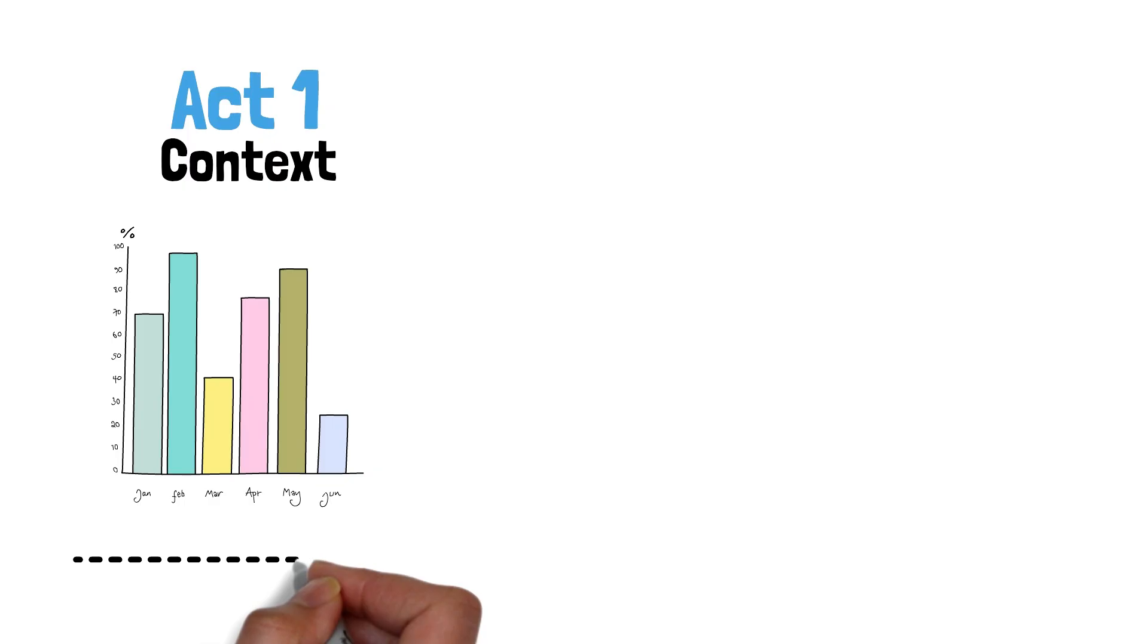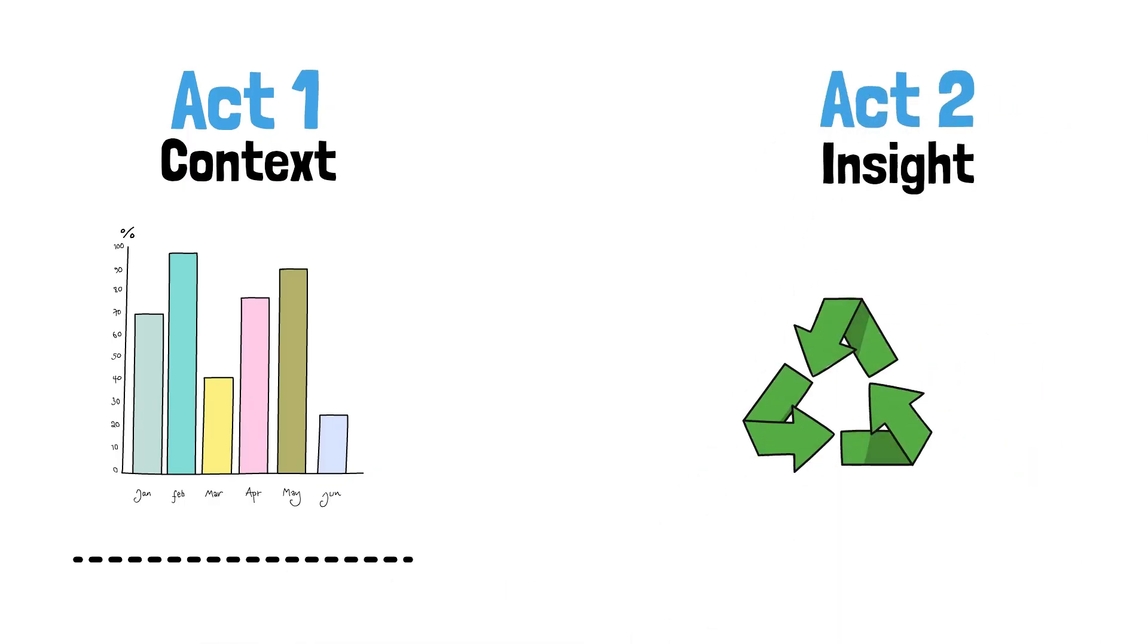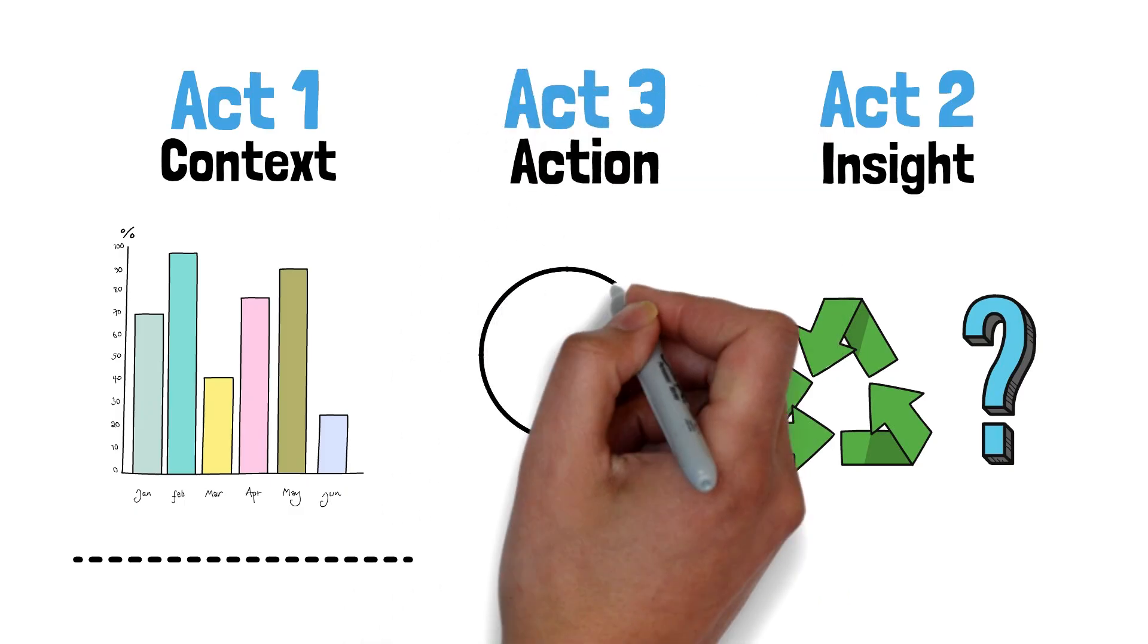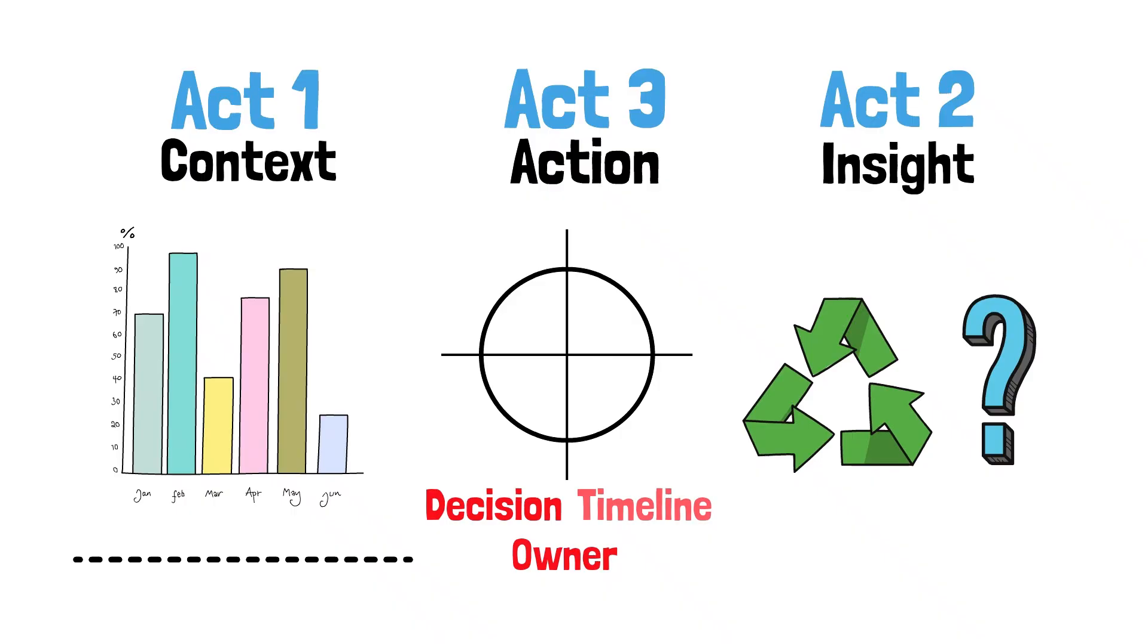Act 1: Context. Frame the problem with one chart and a single sentence. Act 2: Insight. Reveal what changed, where, and for whom. Act 3: Action. Specify the decision, owner, and timeline.